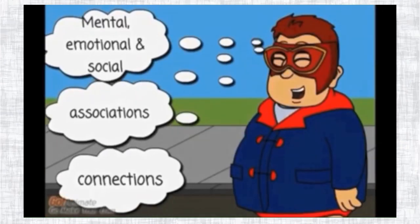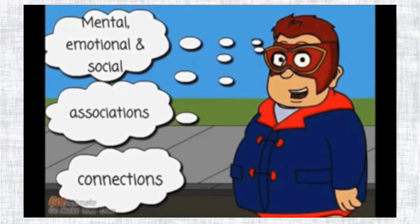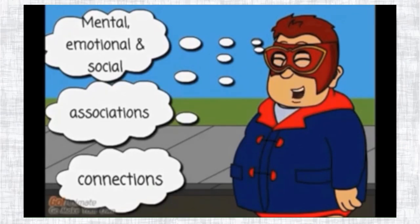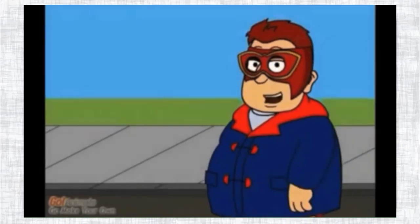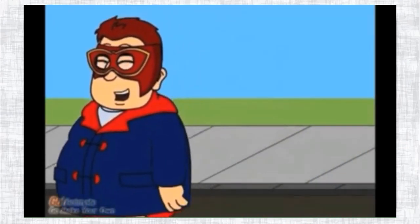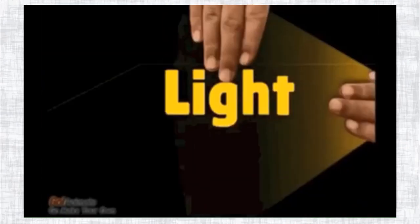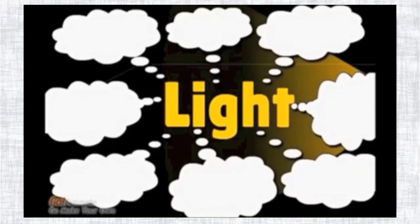Connotation is as easy as denotation. Connotations are the mental, emotional, and social associations our mind makes with words. There are connections with words. Now we're going to do the connotations for 'light' and 'dark.' What comes to your mind when you think of light?